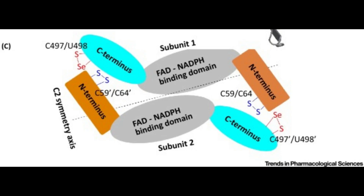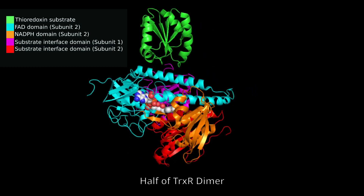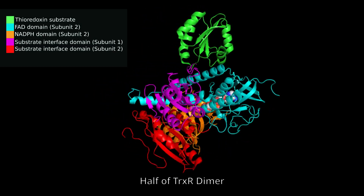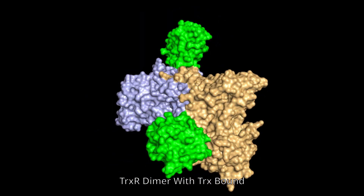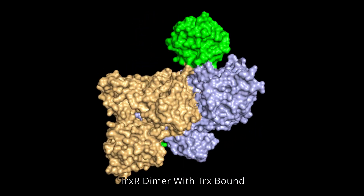When bound to the enzyme, the reduced nicotinamide group is able to interact with and reduce the flavin group of FAD. Thioredoxin reductase actually contains two redox active sites: a disulfide located within an alpha helix at the FAD binding domain near the N-terminus, and a selenyl sulfide at the C-terminus. The N-terminus site receives the electrons from reduced FAD, but it is at the C-terminus site where the substrates are reduced. In order for the two redox sites to interact, the enzyme must form a homodimer, allowing the N-terminus site of one subunit to interact with the C-terminus site of the second subunit. Thus, the functional enzyme is a homodimer containing four redox centers and two substrate binding sites.